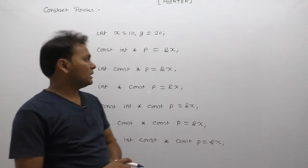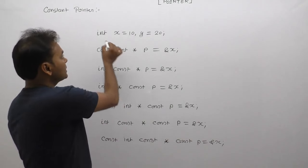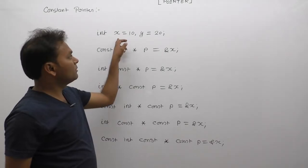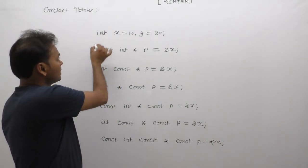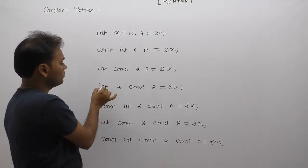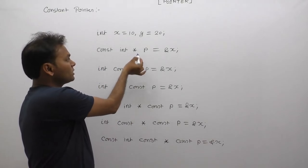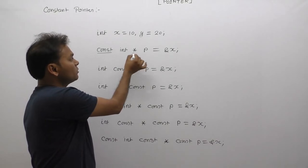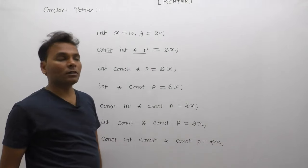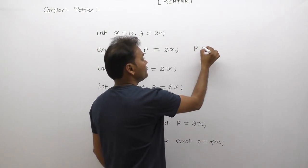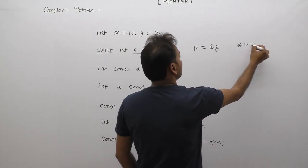In this case we are provided different types of constant declarations, we are discussing them one by one. In the first case, when const appears just before star p, the constant location is considered as star p, not p. In that case, p equals address of y, or star p equals 5 are the operations we consider.